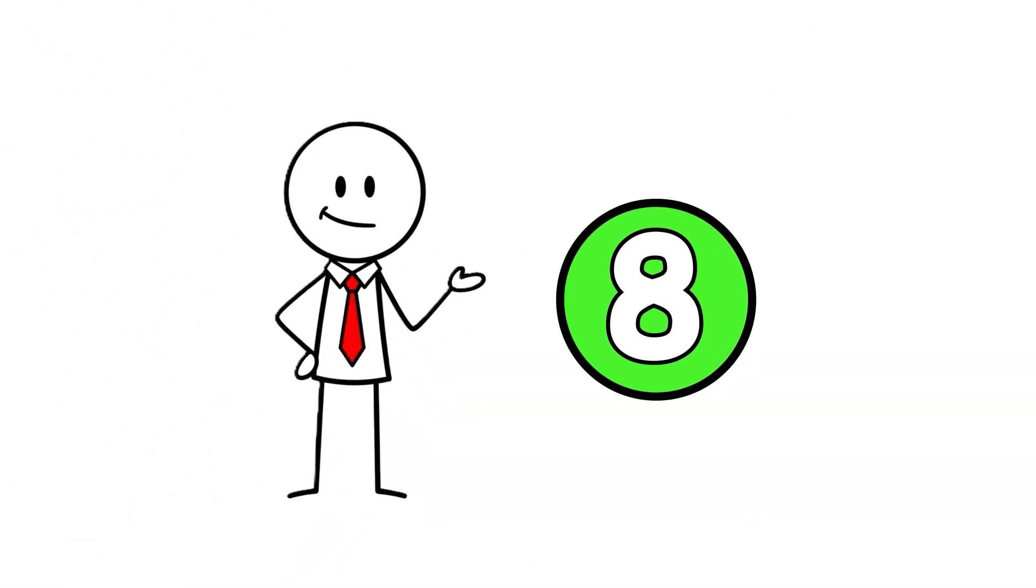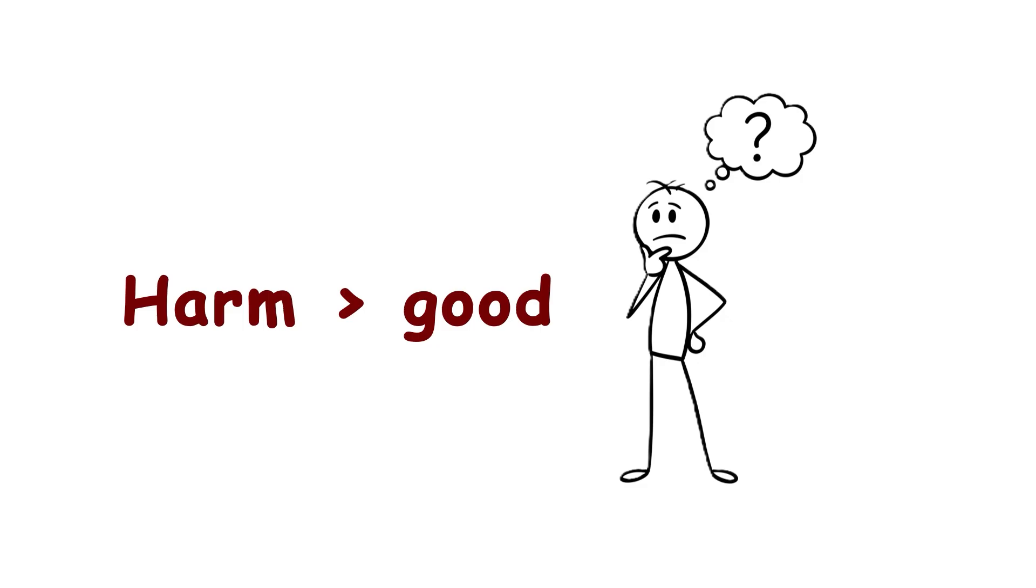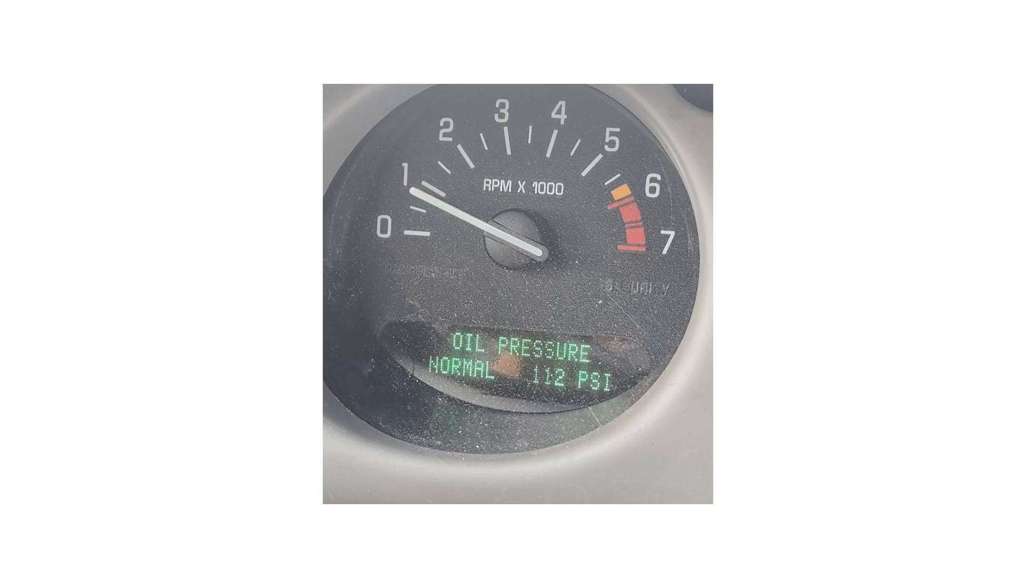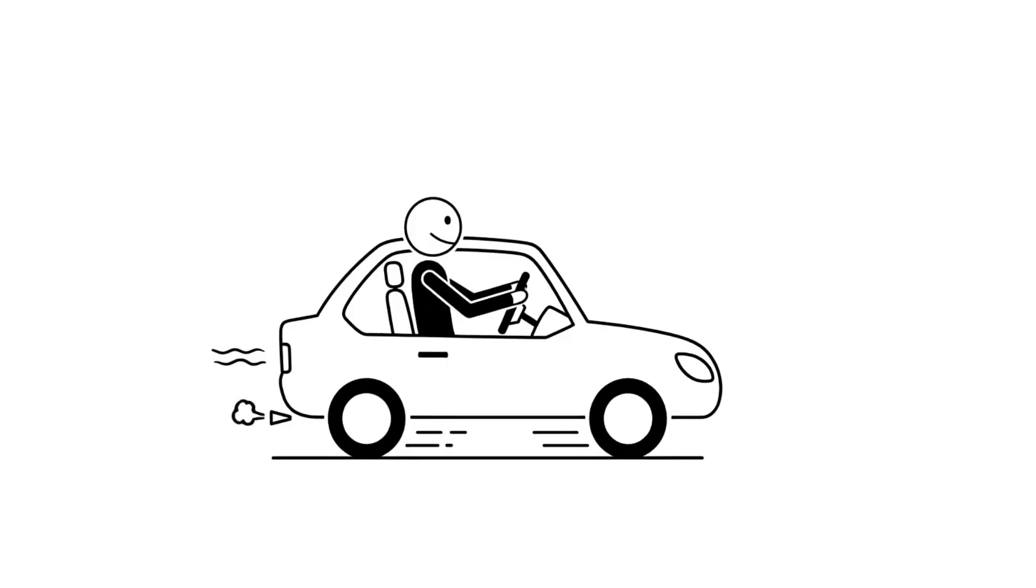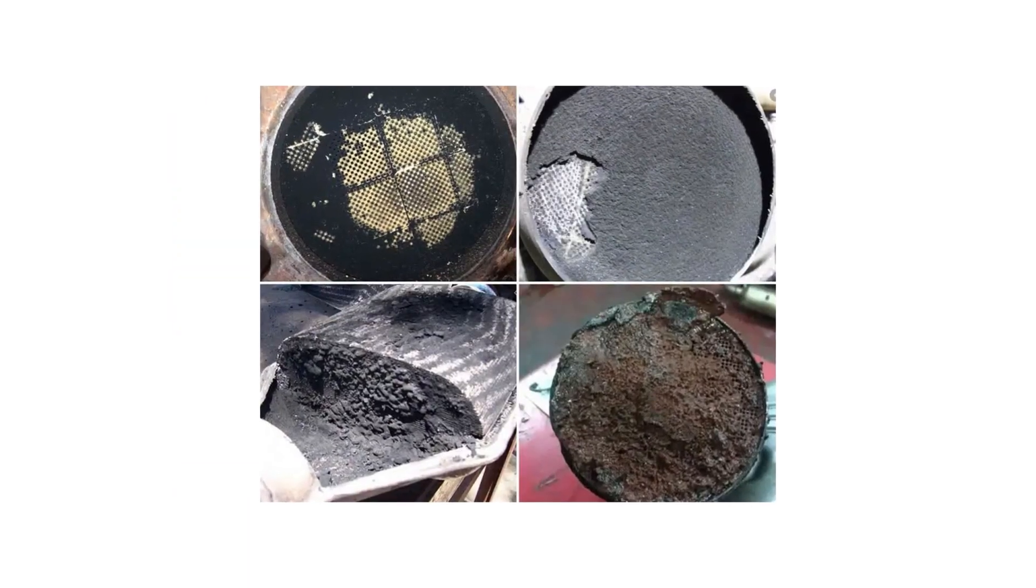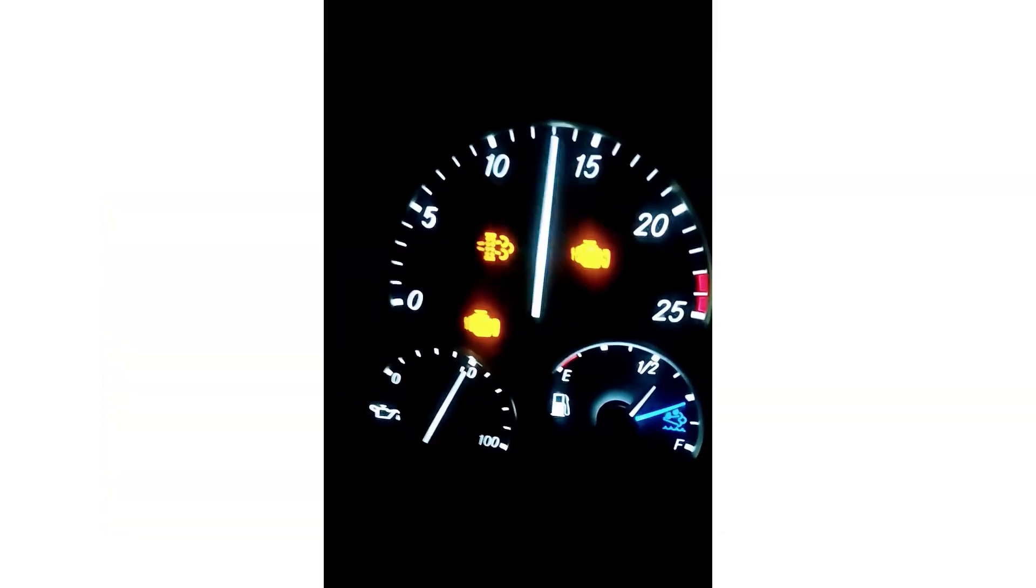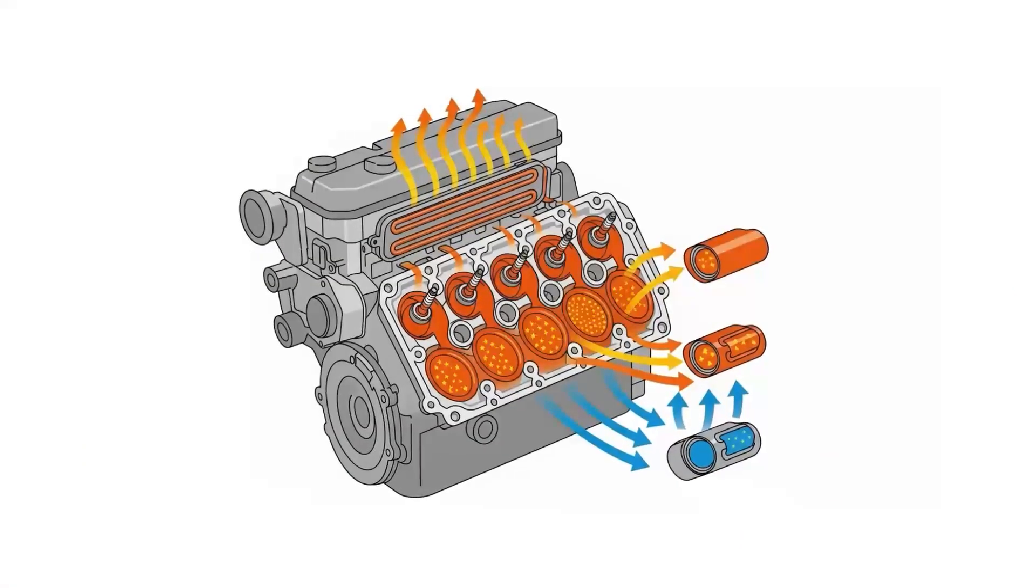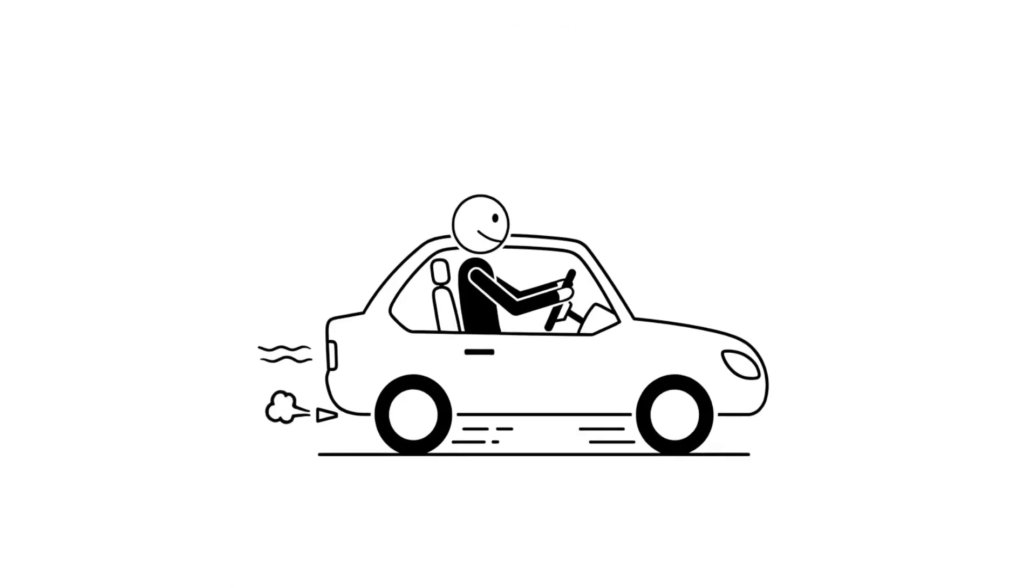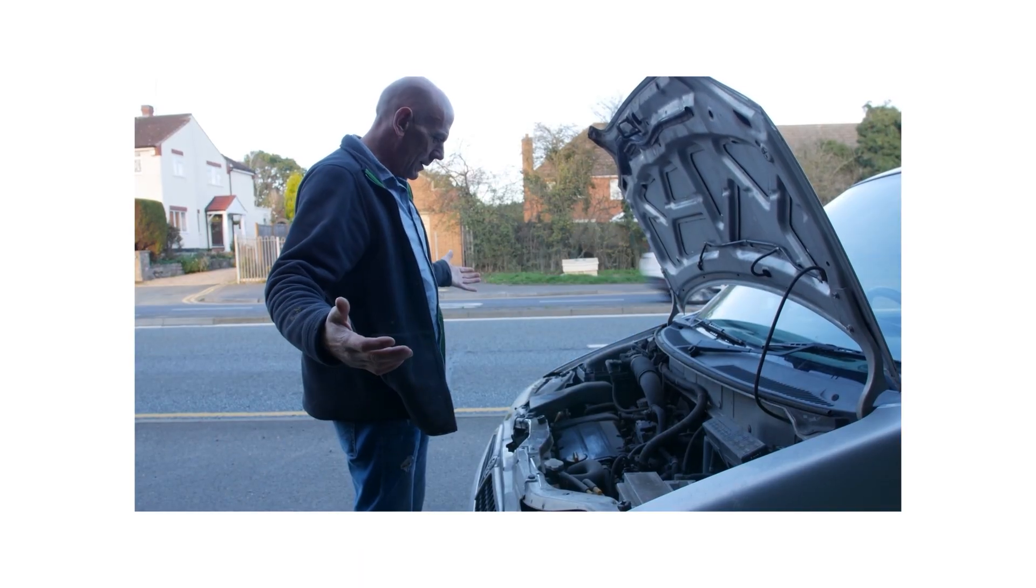Mistake number eight is one almost every diesel owner is guilty of: extended idling to warm up the engine. It feels like the right thing, but it actually does more harm than good. Idling warms the engine slowly, wastes fuel and builds up soot in your exhaust. Modern diesels need a brief idle, just enough for oil pressure to stabilize, usually 10 to 30 seconds, then gentle driving to bring everything up to temperature. Excessive idling causes fuel dilution and can clog your diesel particulate filter, especially if your trips are short. If your DPF doesn't get hot enough to regenerate, soot builds up and eventually triggers warning lights or expensive repairs. The best practice is to let preheat systems do their job, avoid long crank attempts and drive gently until the engine is warm. Short trips and constant idling keep your engine cold and let condensation and sludge build up inside.